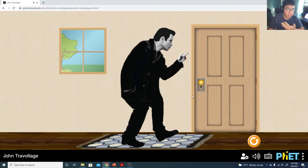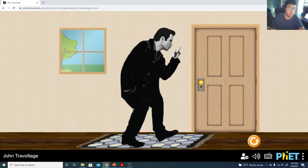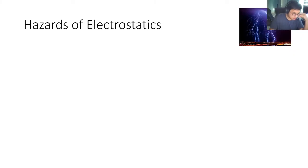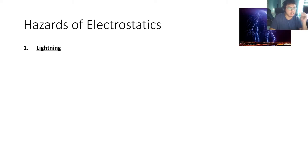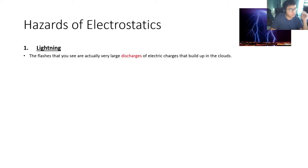When this happens, it can hurt, and it can lead to dangerous situations, which is what we'll talk about today. The first thing we'll talk about is lightning. Lightning is basically a very large discharge that is naturally occurring on Earth. The flashes that you see are actually very large discharges of electric charges that build up in the clouds.